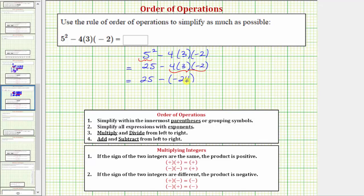Remember, subtracting a negative is the same as adding a positive, so we can rewrite this as 25 plus 24. And I do want to point out that sometimes you won't see this step here. We could have thought of this as just negative 4 times 3 times negative 2, which is positive 24, and then just write plus 24.